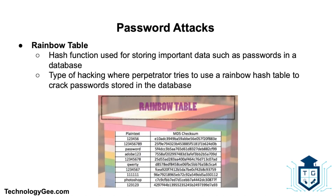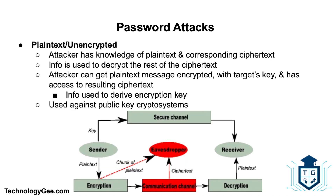Next we have a rainbow table. A rainbow table uses a hash function with cryptography for storing important data such as passwords in a database. A rainbow table attack is similar to a brute force attack, except it is more mathematically sophisticated and takes less time. This is a type of hacking wherein the perpetrator tries to use a rainbow hash table to crack the passwords stored in the database.